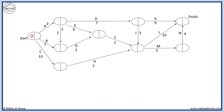Task A takes 3 minutes, so 0 plus 3 equals 3, which we write here. Following task C, 0 plus 10 equals 10. Now to get to this node, we have a choice of two paths. We write the longest path. We have 3 plus 2, which equals 5, or 0 plus 7, which equals 7. 7 is the largest number and gets to go in the node.